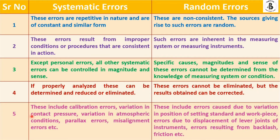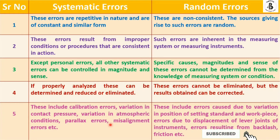The last point covers examples. Systematic errors include: calibration errors, variations in contact pressure (loading errors), variations in atmospheric or environmental conditions, parallax errors from improper measurement methods such as not taking readings exactly perpendicular to the scale, and misalignment or loading errors.